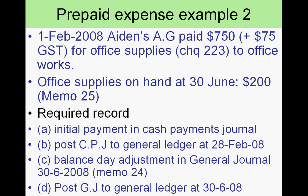The second example covers office supplies. A business bought $750 plus $75 GST of office supplies on the 1st of February. At balance day five months later, a stock take reveals only $200 worth remains. We started with $750 and have $200 left, so we'll record the initial payment in the payments journal, post it to the general ledger, then do the balance day adjustment on the 30th of June.